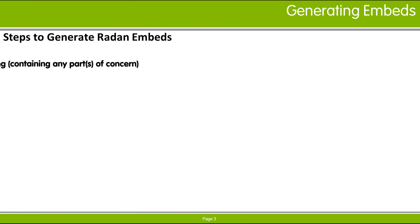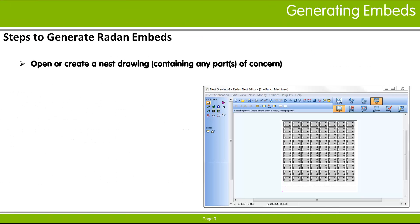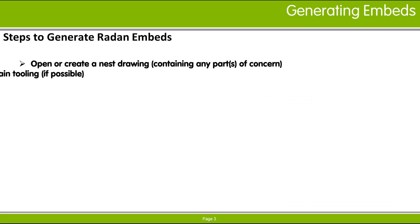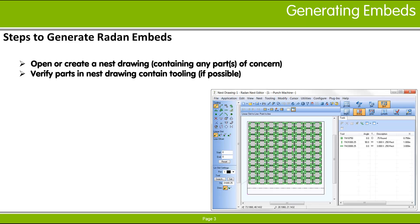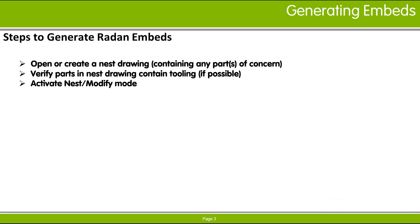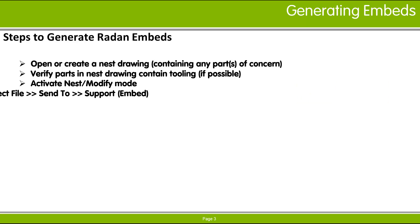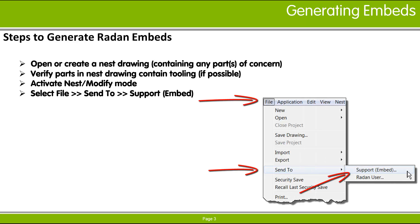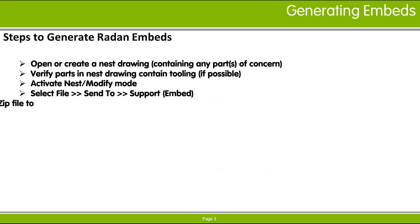To generate an embed file, create or open a nest file including any parts that represent the support issue. Add or verify tooling to the parts if possible. Next, navigate to the nest modify mode and save the nest drawing file, then select Support Embed from the Send To flyout menu on the File pull-down menu.